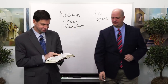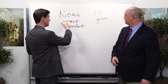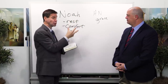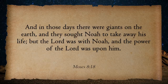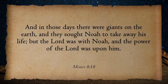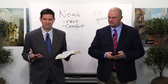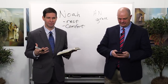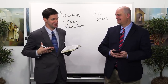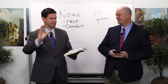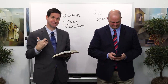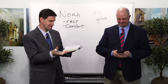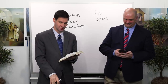Notice in verse 18, the opposite of everything we just discussed — the foil to Noah, which is the people's response. Verse 18: 'In those days there were giants on the earth and they sought Noah to take away his life, but the Lord was with Noah and the power of the Lord was upon him.' It's interesting that they're living in a day when there's apparently not a lot of religious freedom — instead of just ignoring him, they're actually wanting to kill him because of what he's saying.